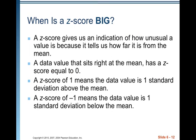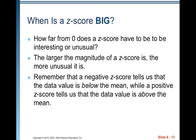When is a z-score big? A z-score gives us an indication of how unusual a value is because it tells us how far it is from the mean. A data value right at the mean has a z-score of zero; a z-score of one means the value is one standard deviation above the mean; a z-score of negative one means it is one standard deviation below the mean. The larger the magnitude of a z-score, the more unusual it is. The sign tells us direction from the mean — you must look at the absolute value of the magnitude to assess how unusual a z-score is.